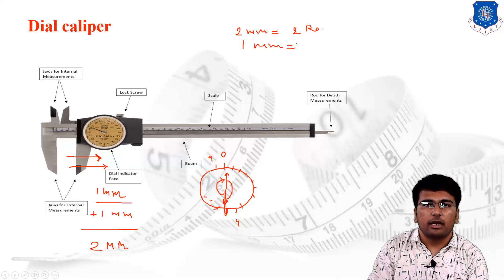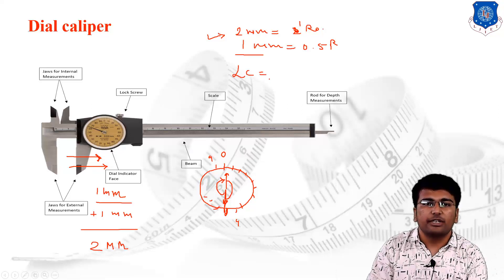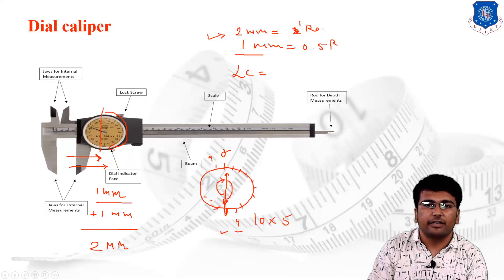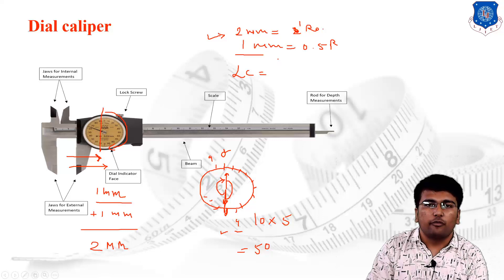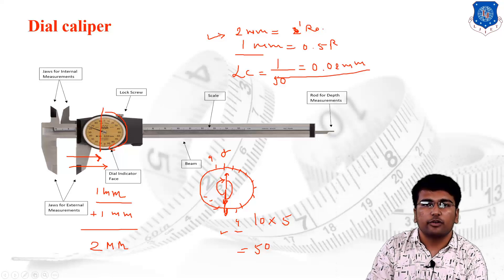To find the least count of the dial caliper: on each half of the dial, starting from 0 to 10, there are 10 major divisions, and each major division has 5 further sub-divisions, giving 50 divisions per half. The least count equals the minimum dimension measurable on the main scale divided by the total number of divisions on the auxiliary scale (dial). This gives 1 mm ÷ 50 = 0.02 mm. So the least count of the dial caliper is 0.02 mm.